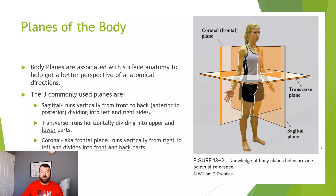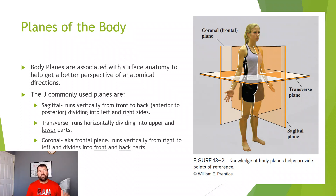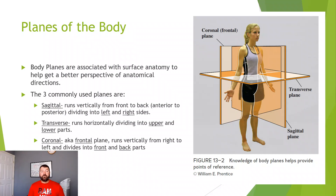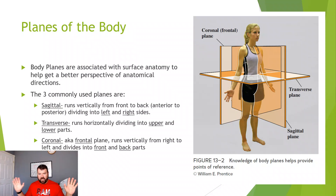The first is the sagittal plane. Think of a plane as dividing the body into different sections — either left and right, front and back, or top and bottom. The sagittal plane runs vertically and divides the body into left and right sides.